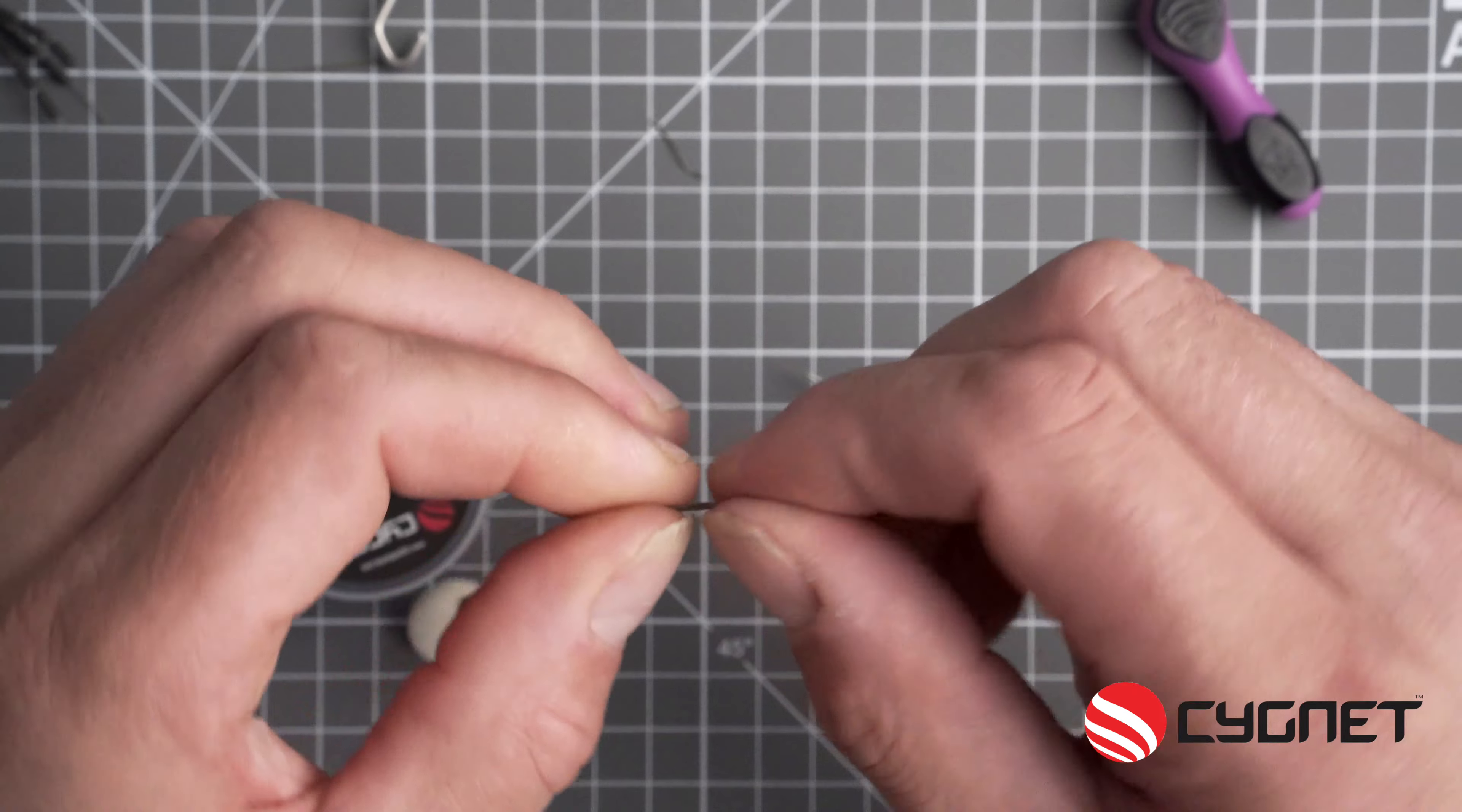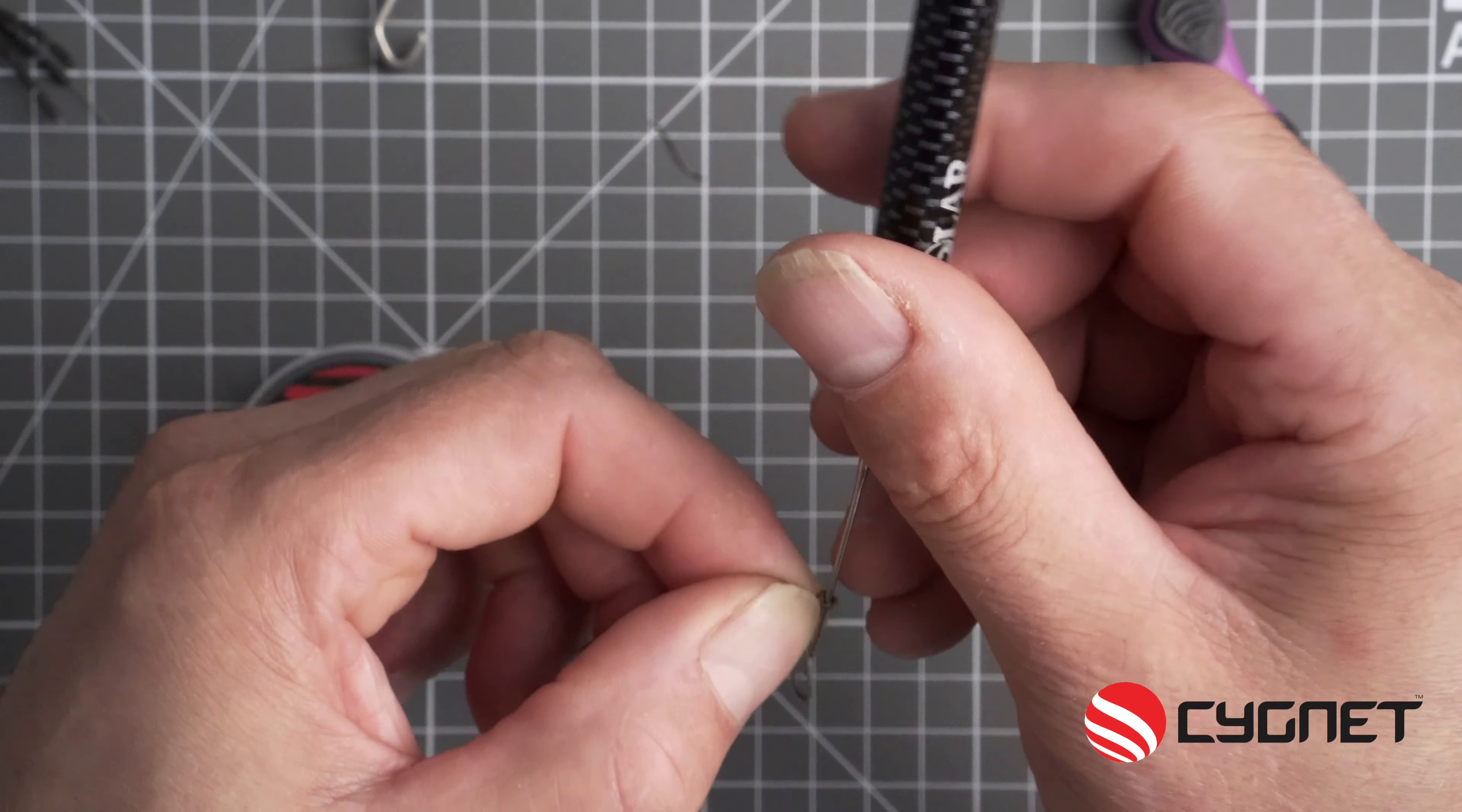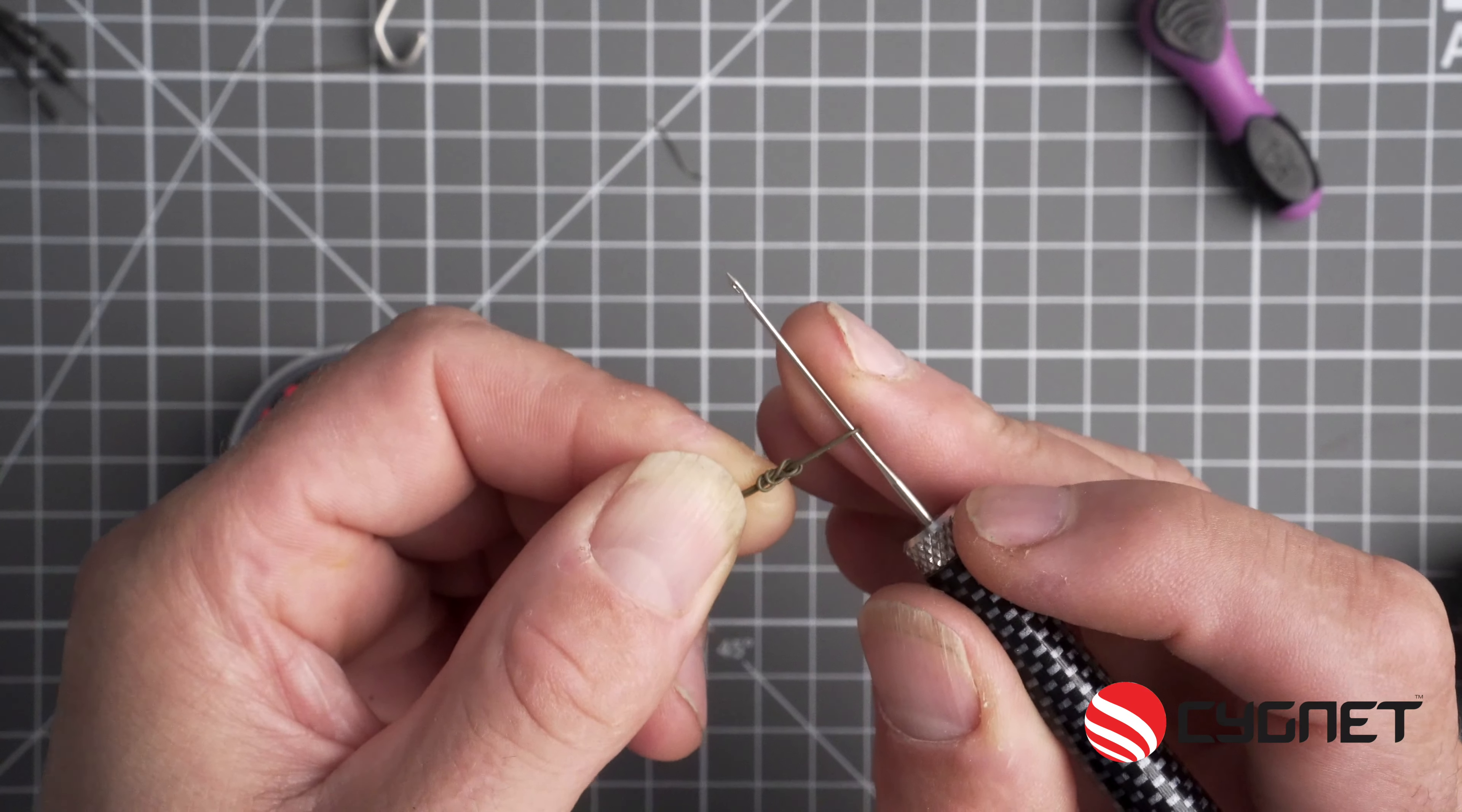Now at the swivel end, I tie a figure of eight loop in the coated material using my baiting needle, and then trim off again with your scissors.